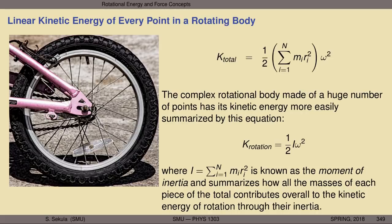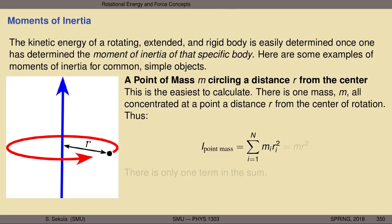The moment of inertia is an inertial quantity that summarizes how all the masses of each piece of a rotating body contribute to the overall kinetic energy of rotation through their inertia. Moments of inertia are specific to different rotating structures — you have to know the mass and how it's distributed relative to the center of rotation. For instance, a hoop going in a circle around its center is not the same as a solid disk rotating around its center, even for the same total mass.